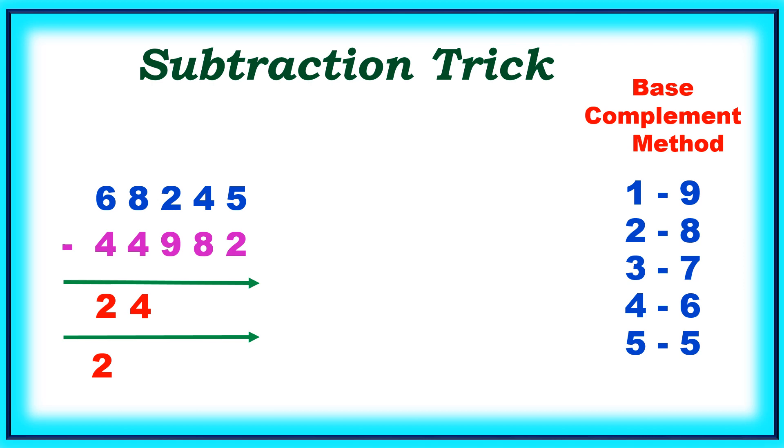Hence this 4 will become 3. Reduce one number. And then for 9, complement is 1. 1 plus 2 is 3.